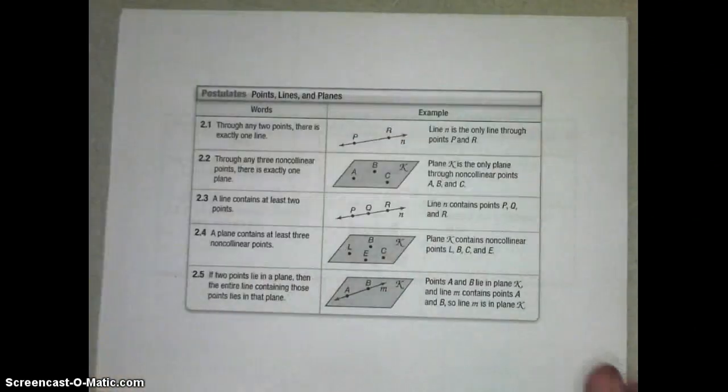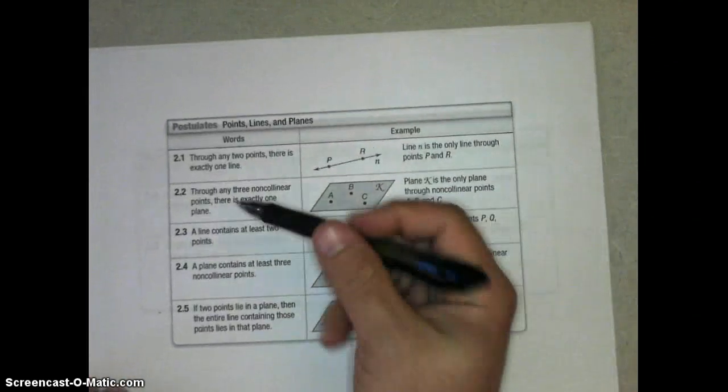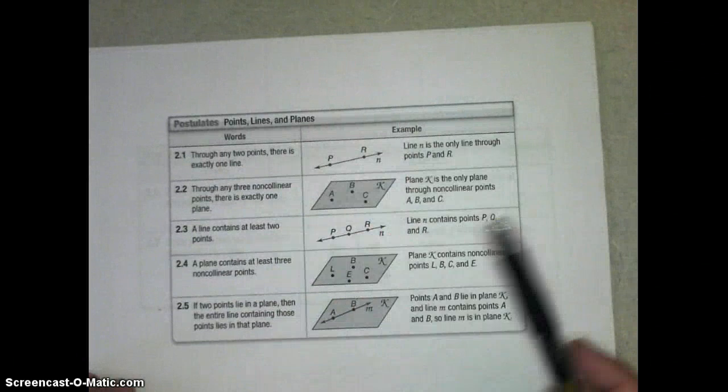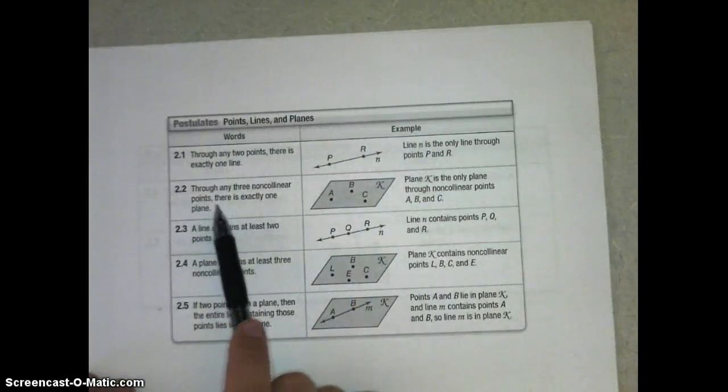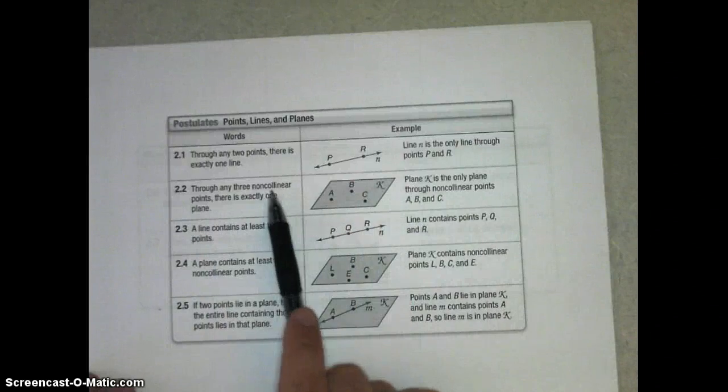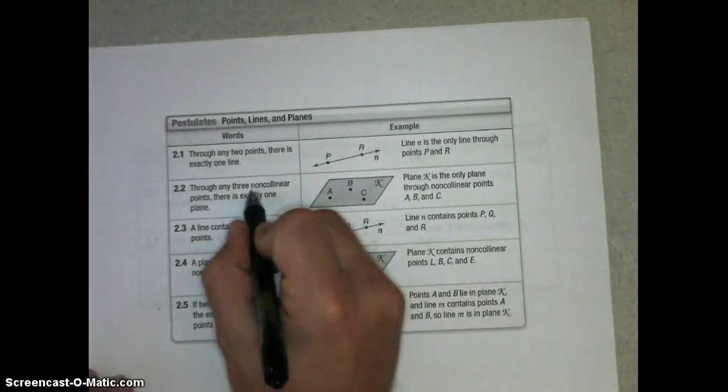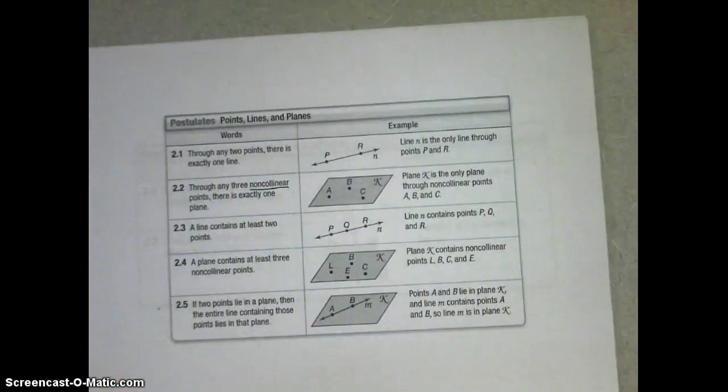Let's go ahead and take a look at those real quickly. You should have these postulates written down. Through any two points, there's exactly one line. The next postulate is through any three non-collinear points, make sure you have specified non-collinear, there's exactly one plane.